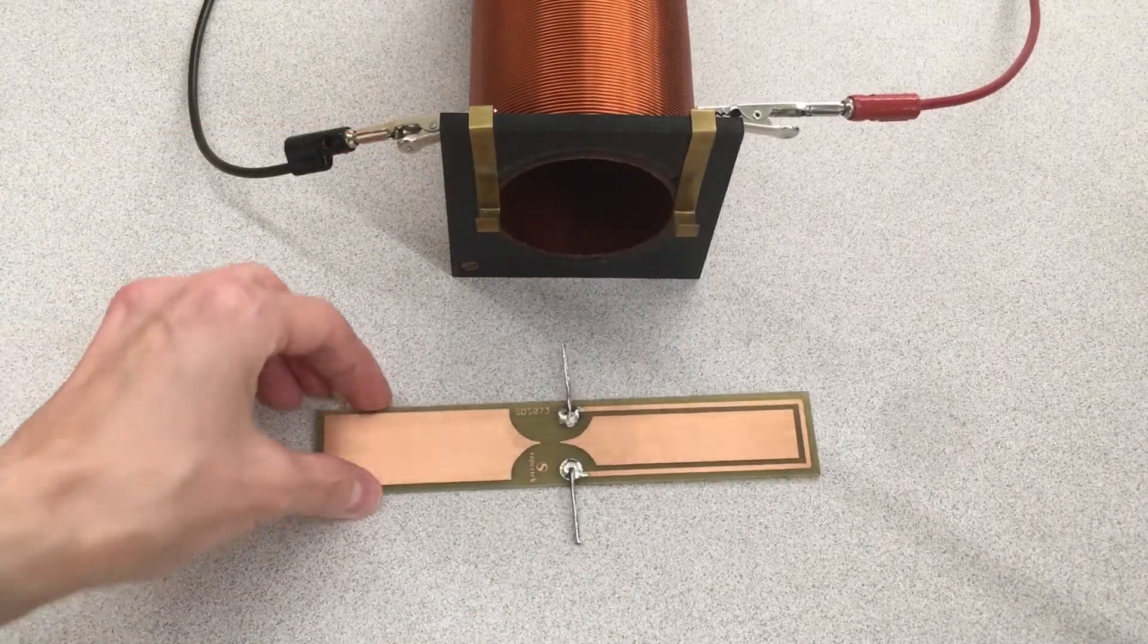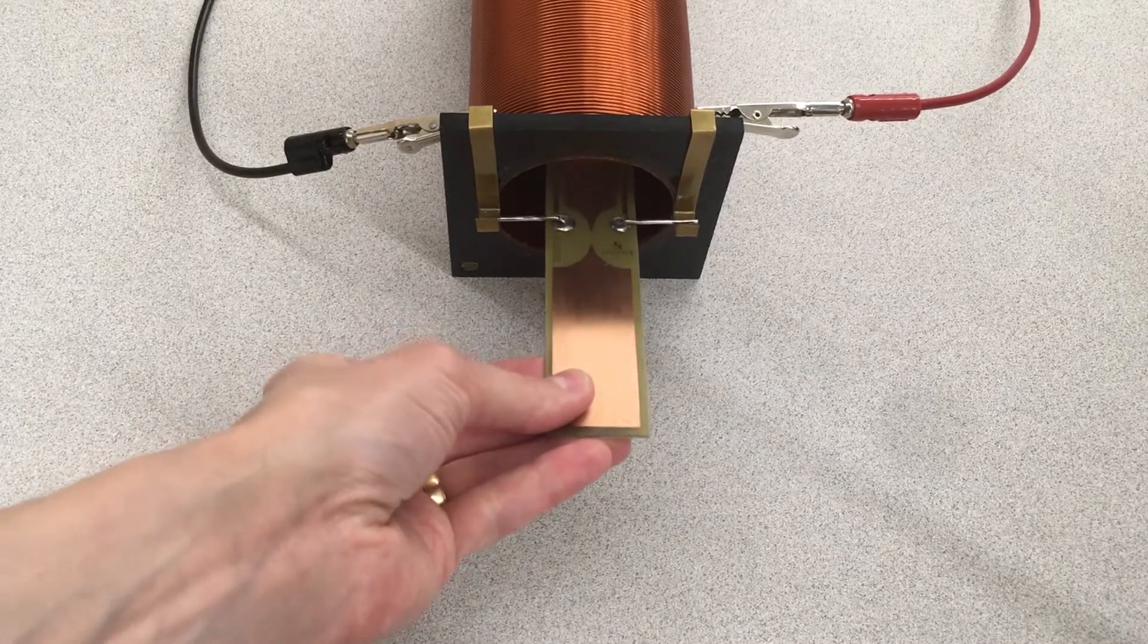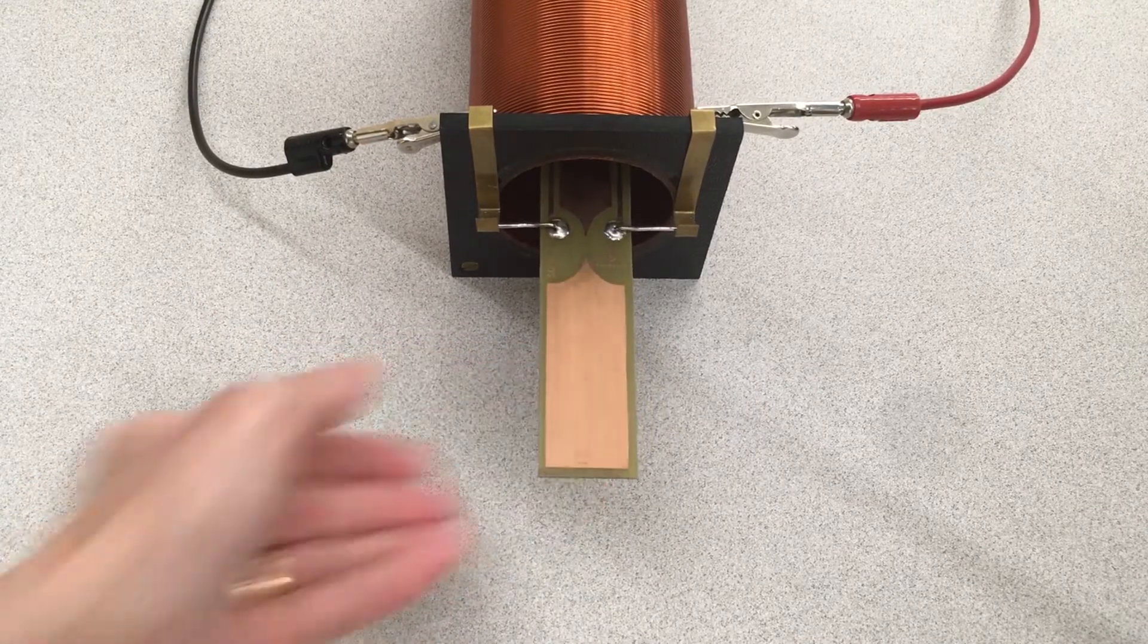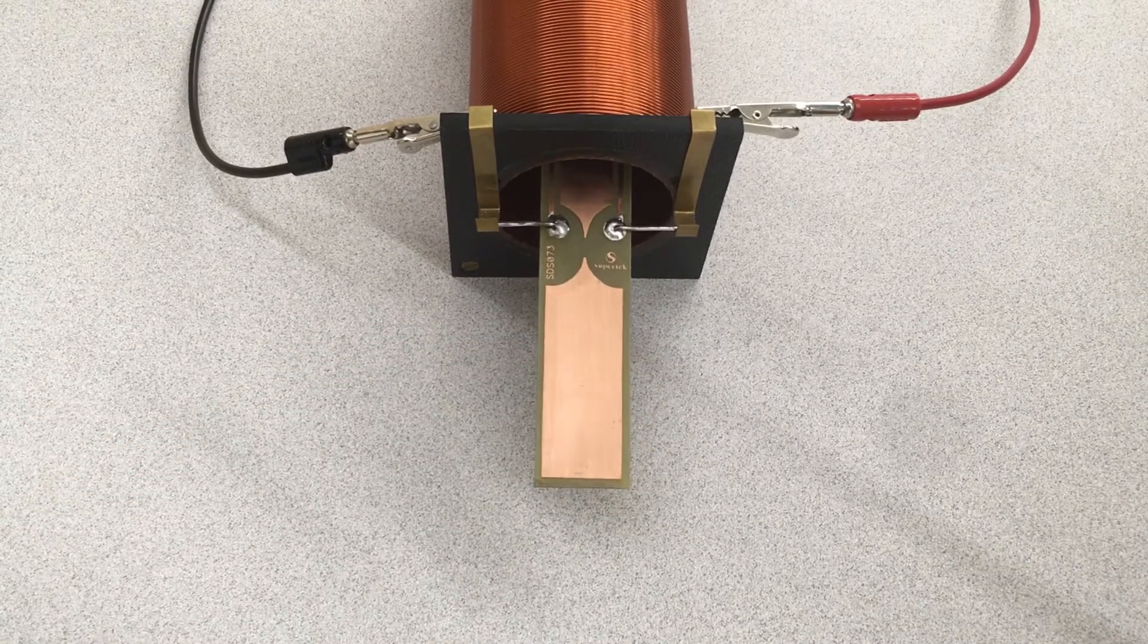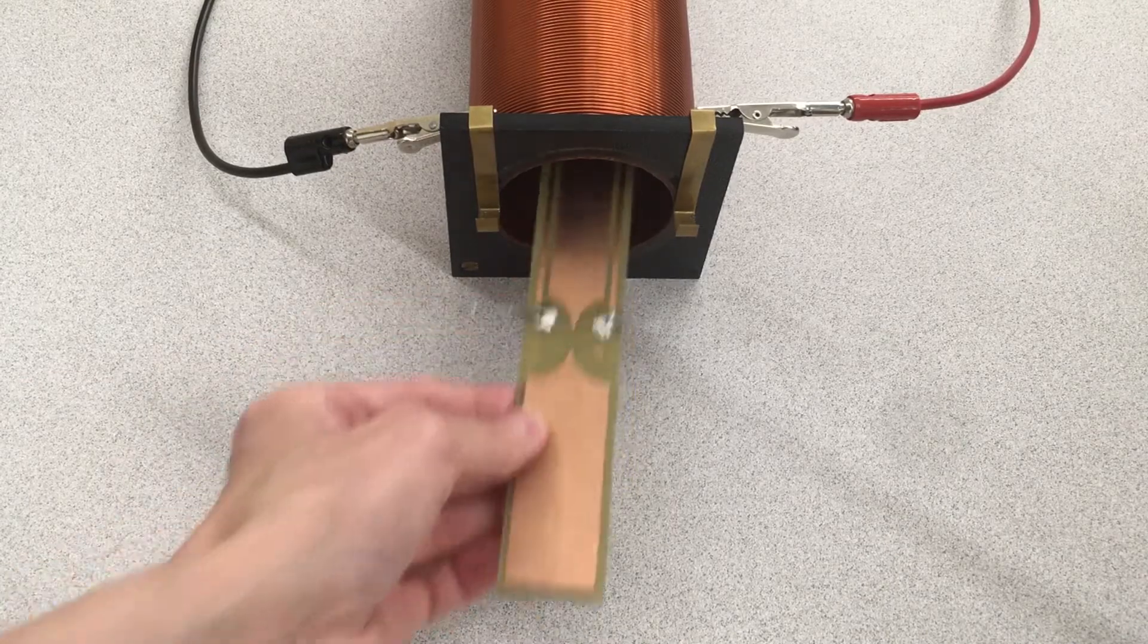The current balance should be placed on the pivot points with the wire inside the solenoid. If it is not level, you can weigh down the higher end by adding tape to the bottom.